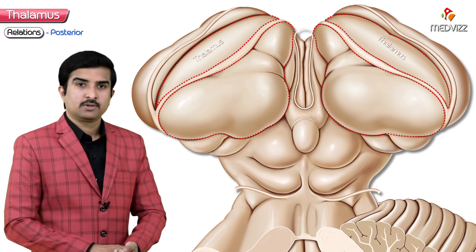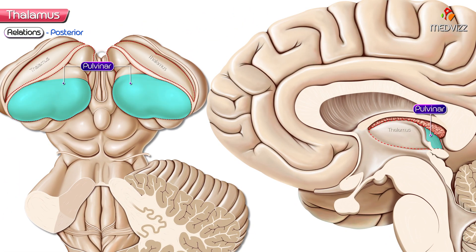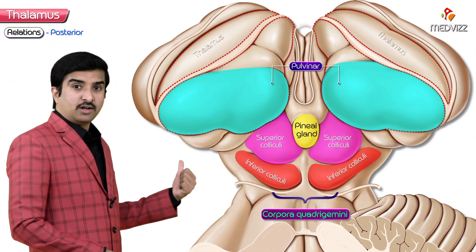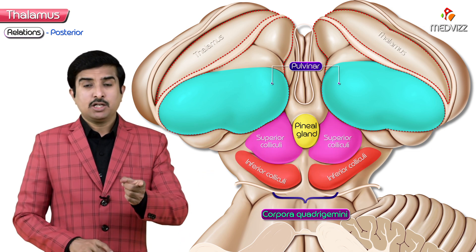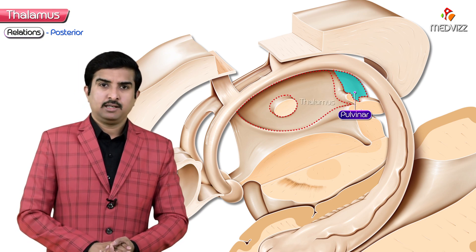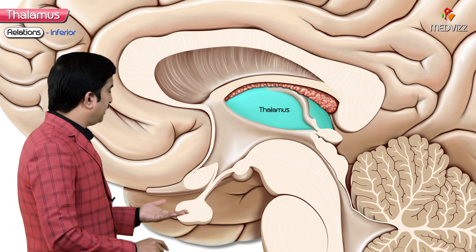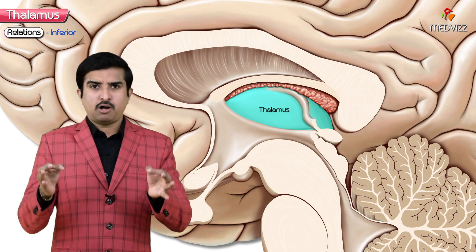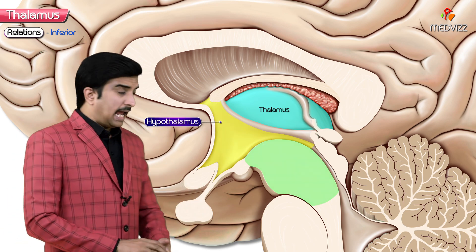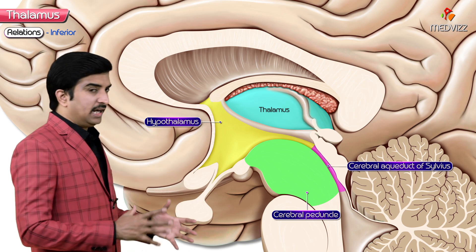The posterior most aspect of the thalamus is known as the pulvinar. Each pulvinar is lateral to the pineal gland, the habanular and posterior commissures, and posterolateral to the corpora quadrigemini (superior and inferior colliculi), and superior to the medial and lateral geniculate bodies. The posterior thalamus is deep to the splenium of the corpus callosum. Inferiorly, the hypothalamus lies anteroinferior to the thalamus, while the cerebral peduncle and the cerebral aqueduct of Sylvius lie directly inferior.